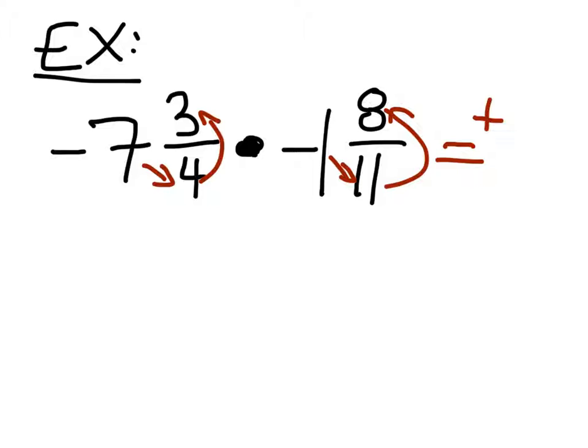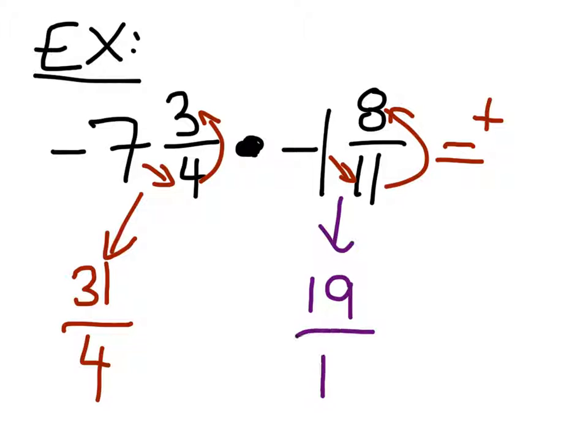Seven times four is twenty-eight plus three? Thirty-one. So this one gives me thirty-one over four. This one will give me one times eleven? Eleven. Eleven plus eight? Nineteen. Nineteen over eleven. Now I can multiply. So thirty-one times nineteen is a very big number. Five eighty-nine. Thank you. So we've got five eighty-nine.